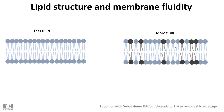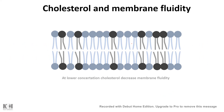Lipid structure also affects membrane fluidity. A membrane with all saturated fatty acid chains is less fluid — saturated chains pack very densely, behaving more like a rigid body. But if you have unsaturated fatty acids, the double bonds create a kink. This kink prevents dense packing, so a membrane rich in unsaturated fatty acids is more fluid than one with only saturated fatty acids. Membrane composition is a big deal for fluidity.